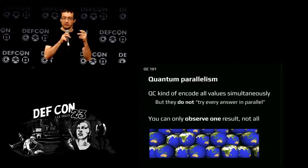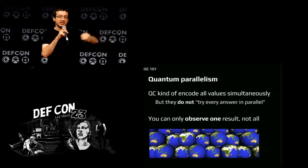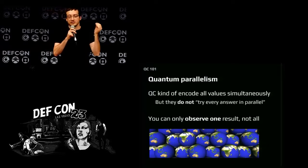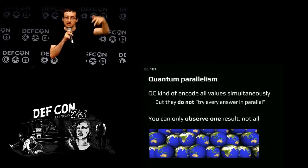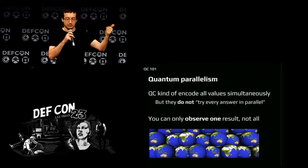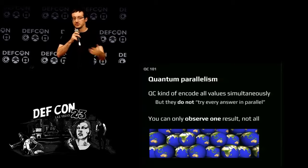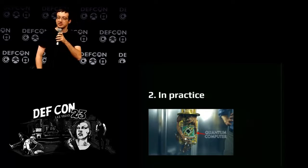The second misunderstanding is quantum parallelism. Some people say you have superposition so it's like trying everything in parallel — parallelism for free. That's not the reality. In some sense you compute several values at the same time, but you can only look at one result, not all of them. You cannot say I want the result that gives a specific value — you get a random result. There's no magic here.